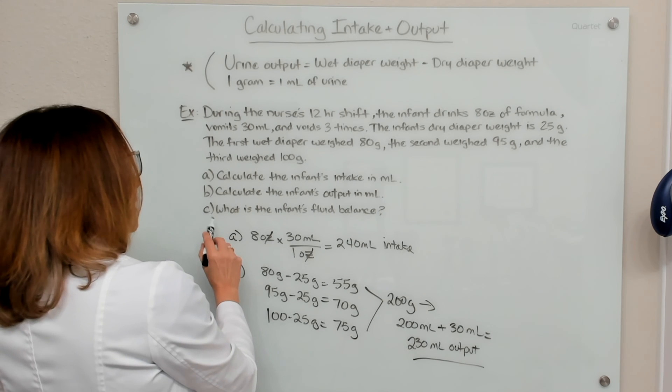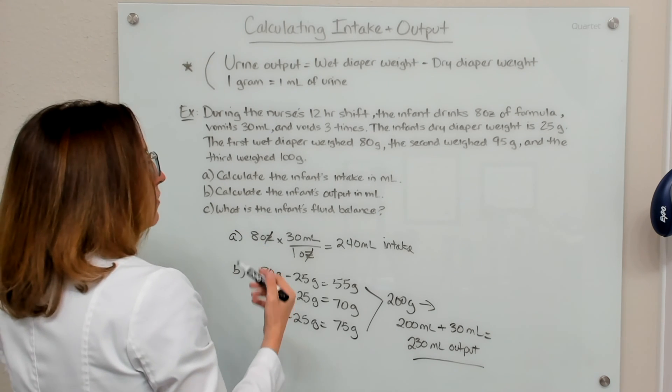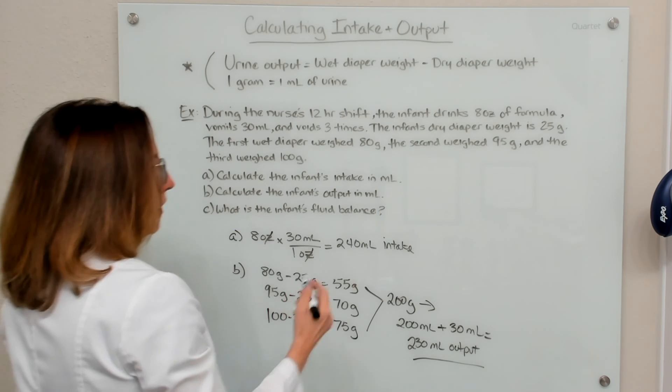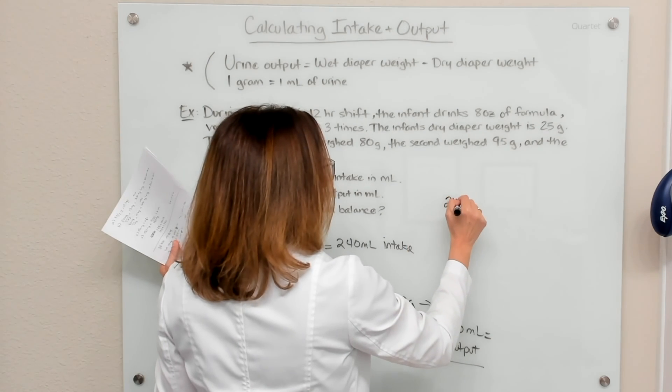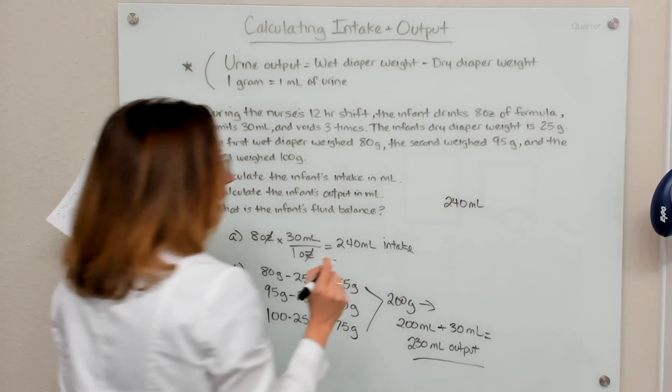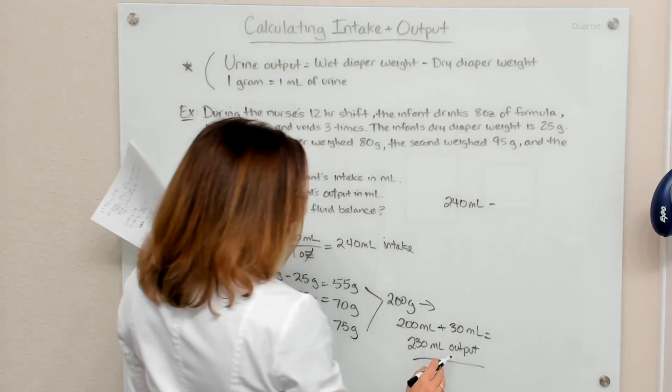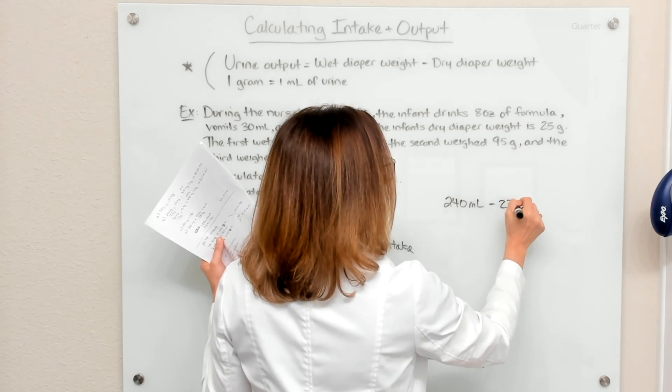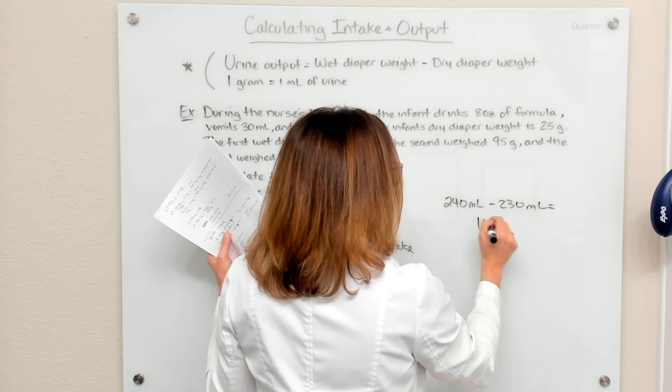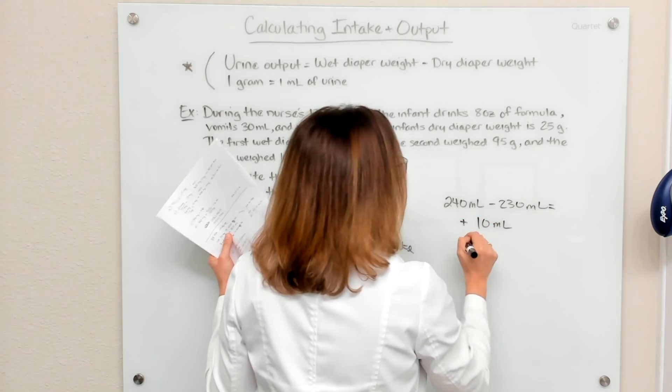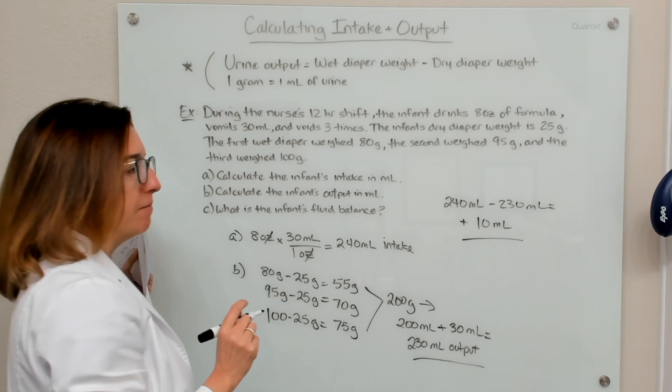Then in part C, it asks us what is the infant's fluid balance? So if I take 240 mls, that's the infant's intake, subtract out the output, which was 230 mls, I end up with a positive fluid balance of 10 mls. And that is the answer to part C of this problem.